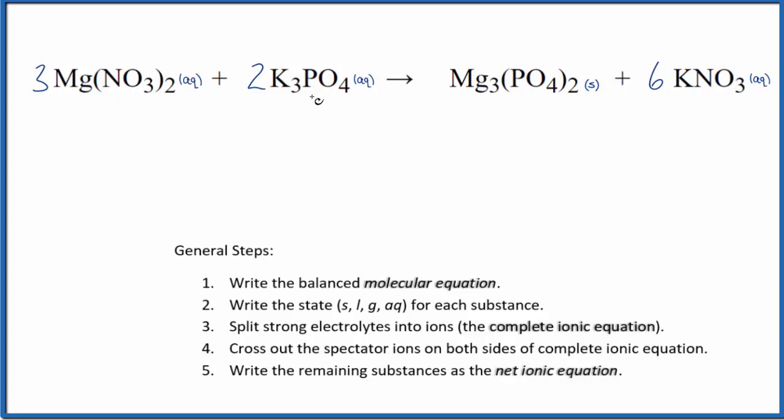In general, compounds with the phosphate ion here, they're insoluble with a few exceptions. For example, elements in group one like sodium and potassium phosphate, they're soluble.